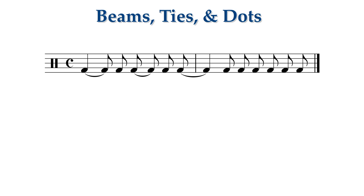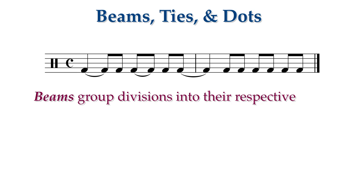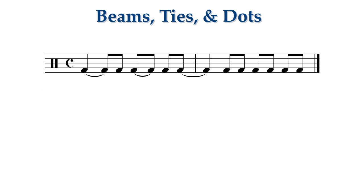When divisions or subdivisions belong to the same beat, we group them together with a beam. This makes it easy to see the beats. Sometimes we beam half measures as a group as well.